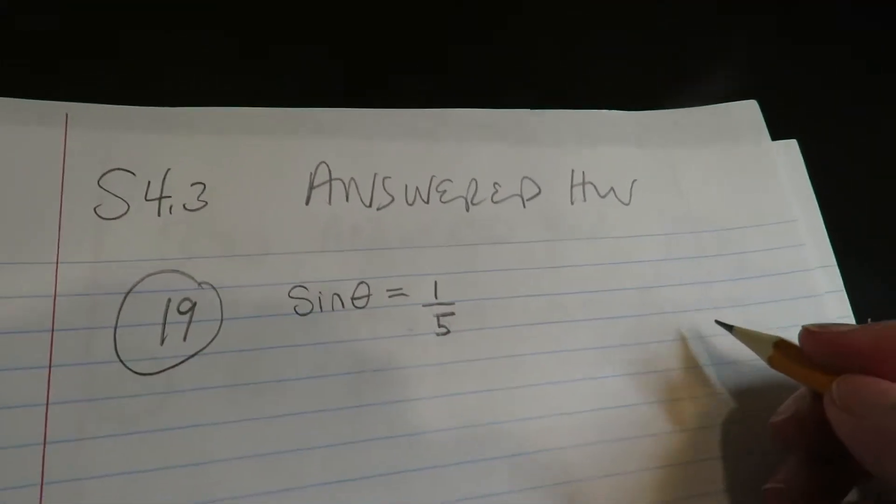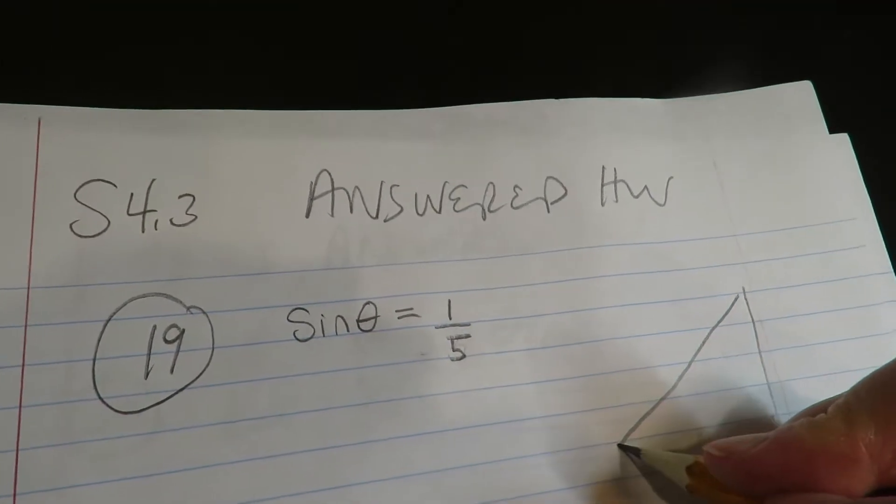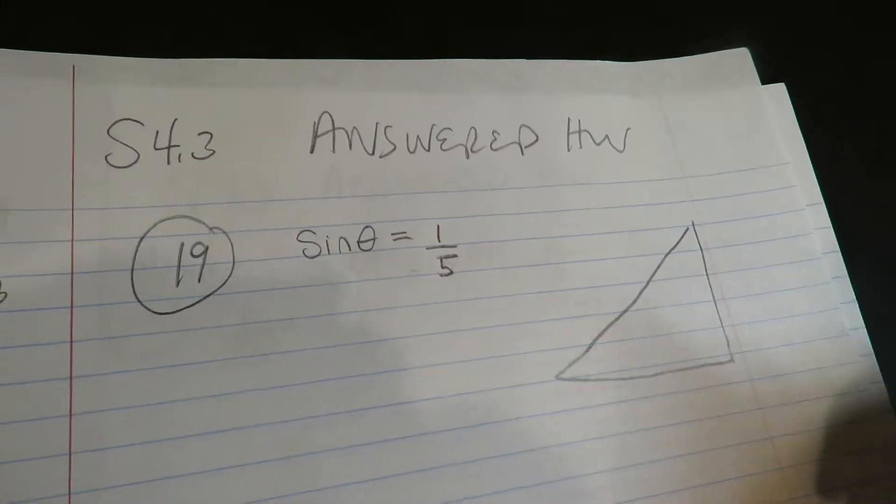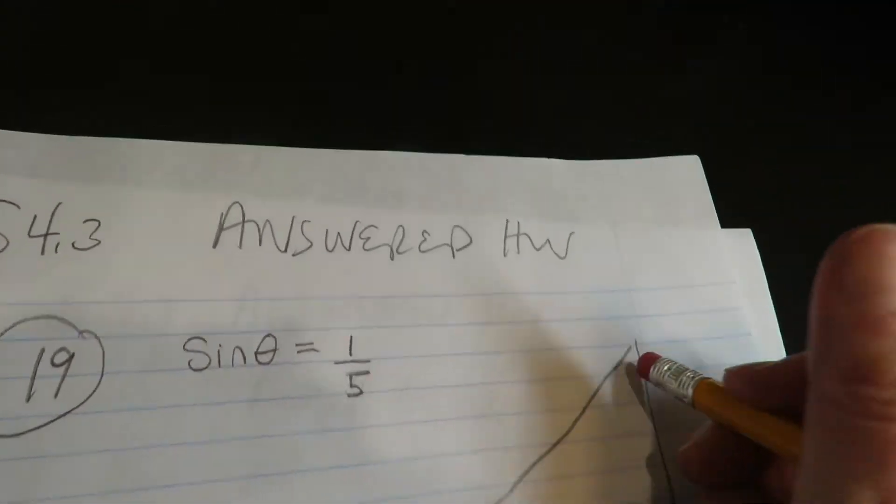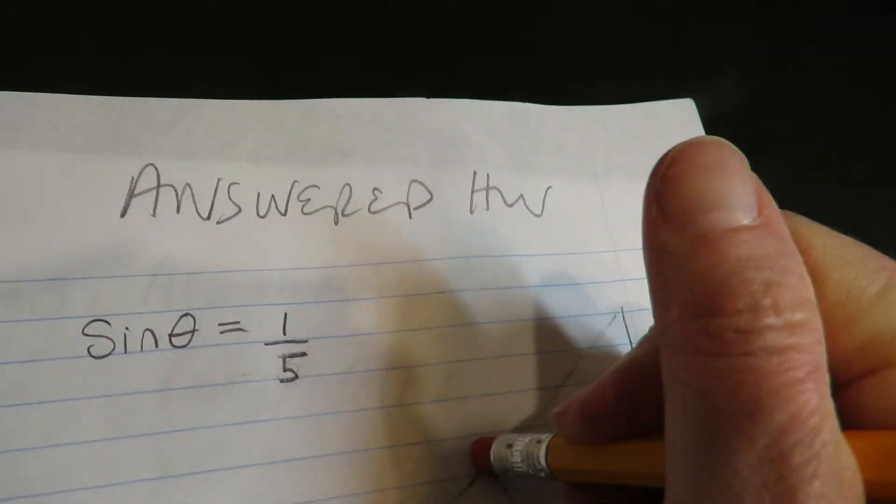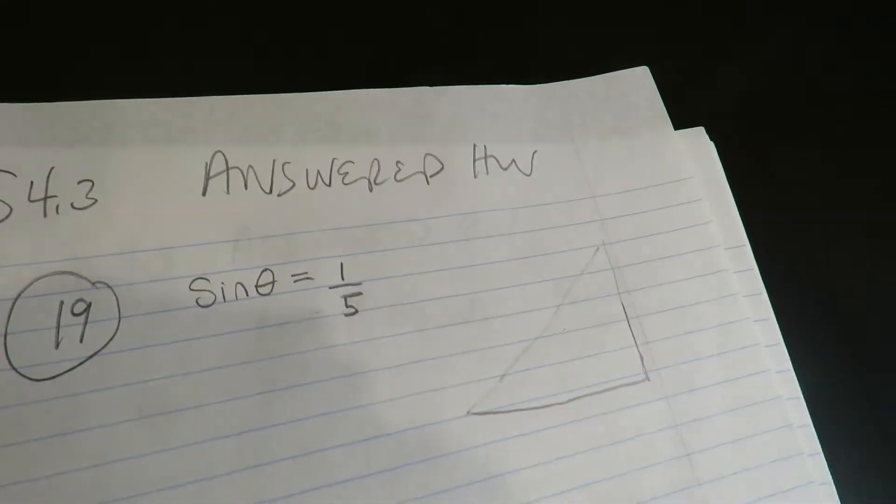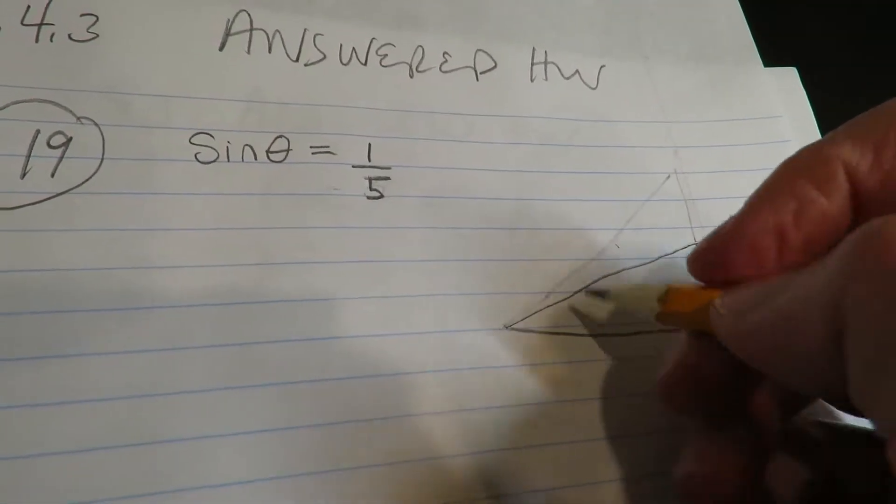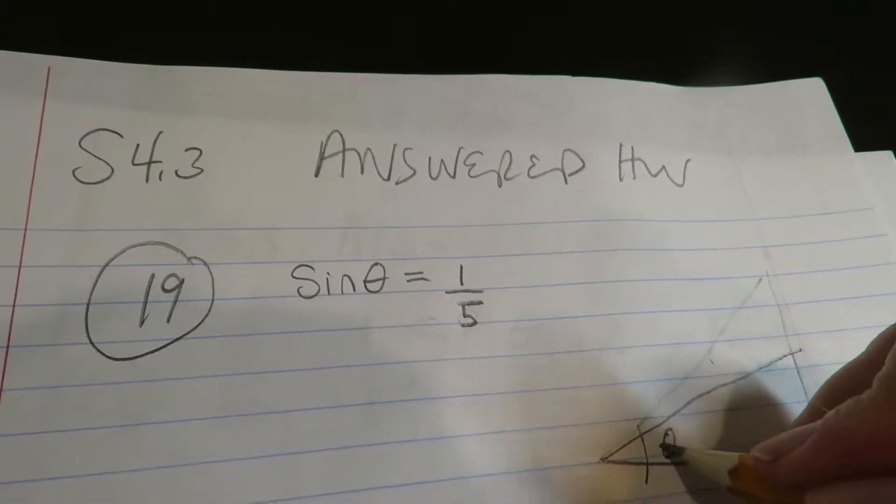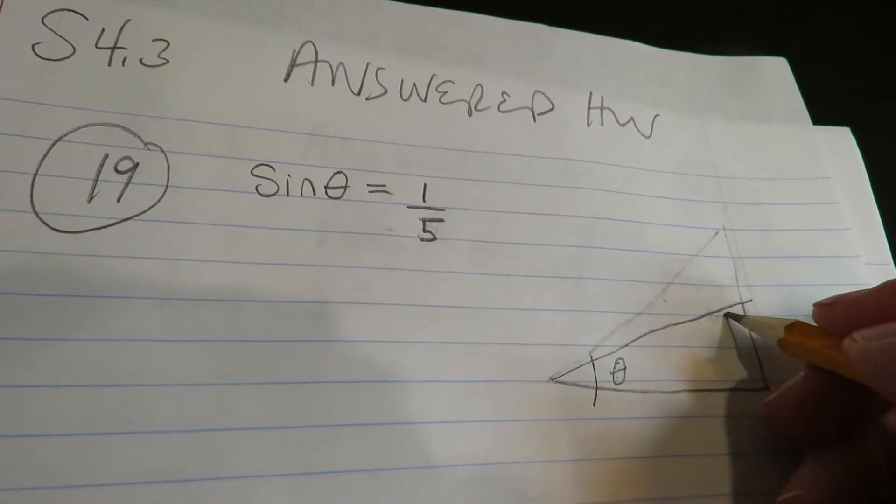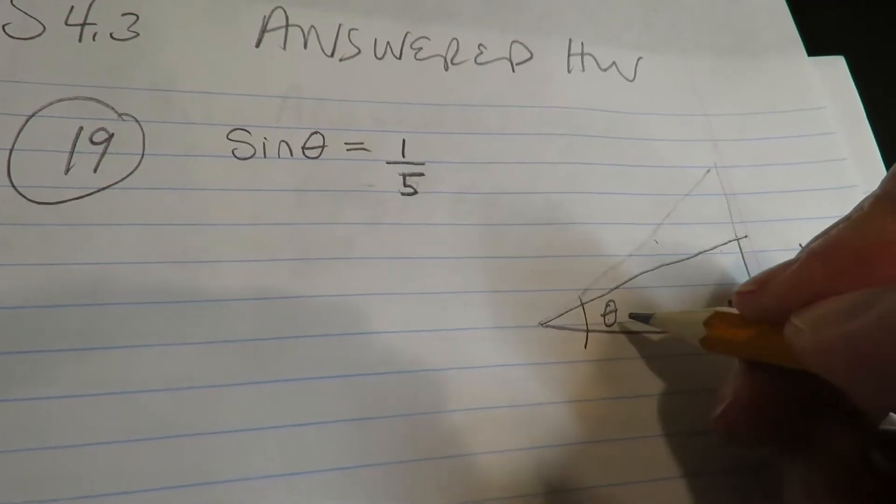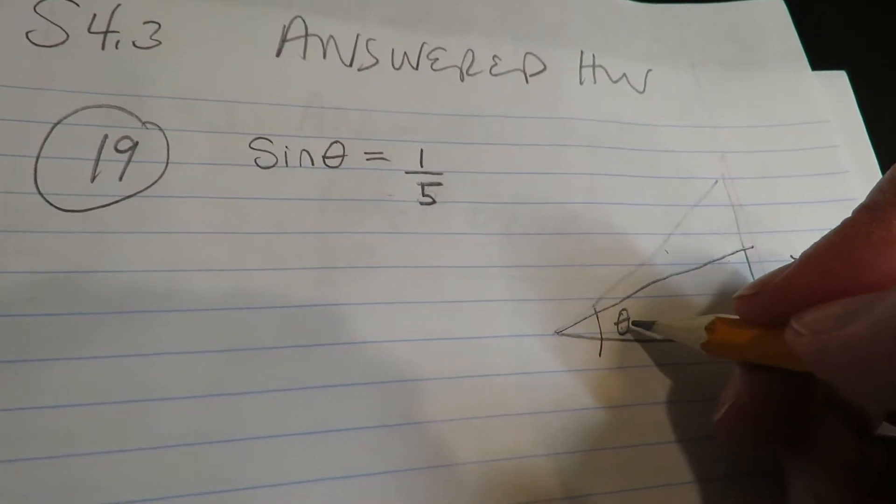So what you want to do is draw the triangle they're giving you. Because some of you are very meticulous, let me do this a little bit better to scale. Now, I'm choosing to put theta here. You could choose to put theta there, it just depends how you want to draw your triangle. But once you choose where theta is, everything else revolves around theta.